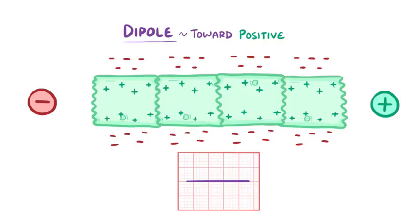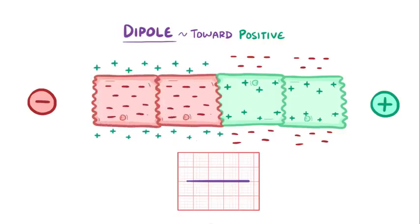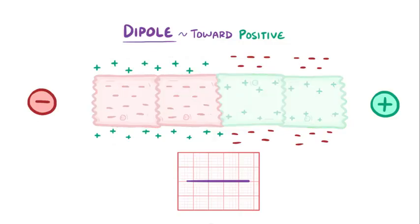Moments later, a wave of repolarization goes through. Pausing halfway through again, now the vector dipole goes in the opposite direction and faces the negative electrode, which means there'll be a negative deflection on the ECG tracing. Again, the bigger the dipole, the bigger the negative deflection.